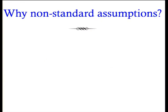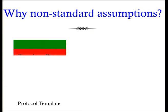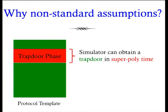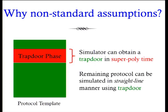Let's understand why the initial works required superpolynomial time security assumptions. Looking at a protocol template these works used: at some point during the protocol there is a trapdoor phase where the simulator can run in superpolynomial time to get a trapdoor, and once it has this trapdoor it can simulate the remainder of the protocol in a straight-line manner without any complications.